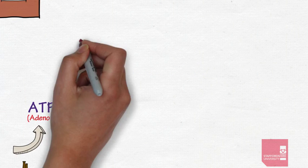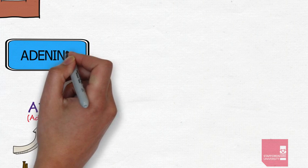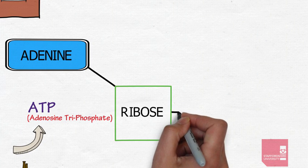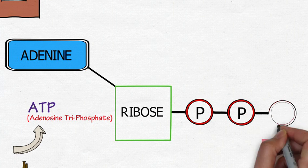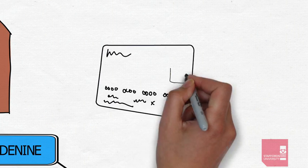This molecule consists of several components including adenine, ribose, and three phosphate groups joined together by high-energy bonds, and this is very important as it means that ATP can be used as the energy currency of the body.